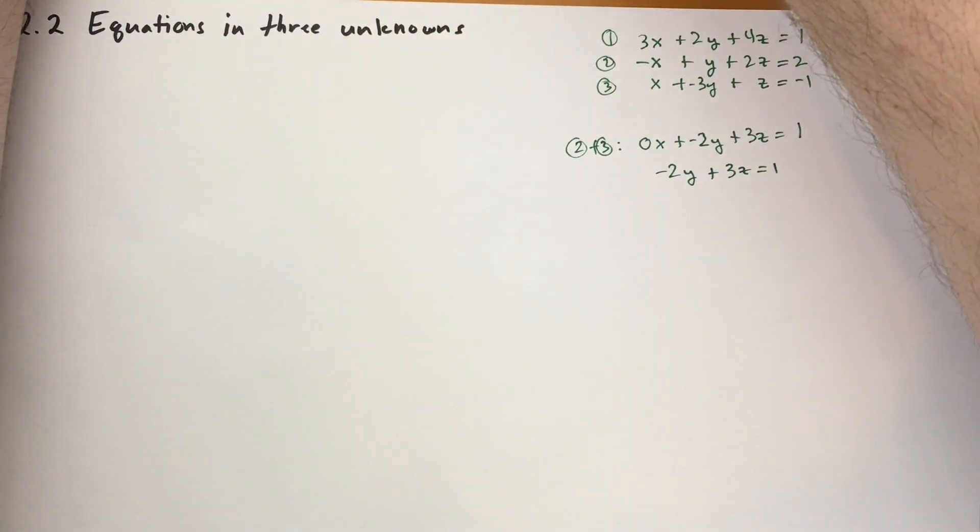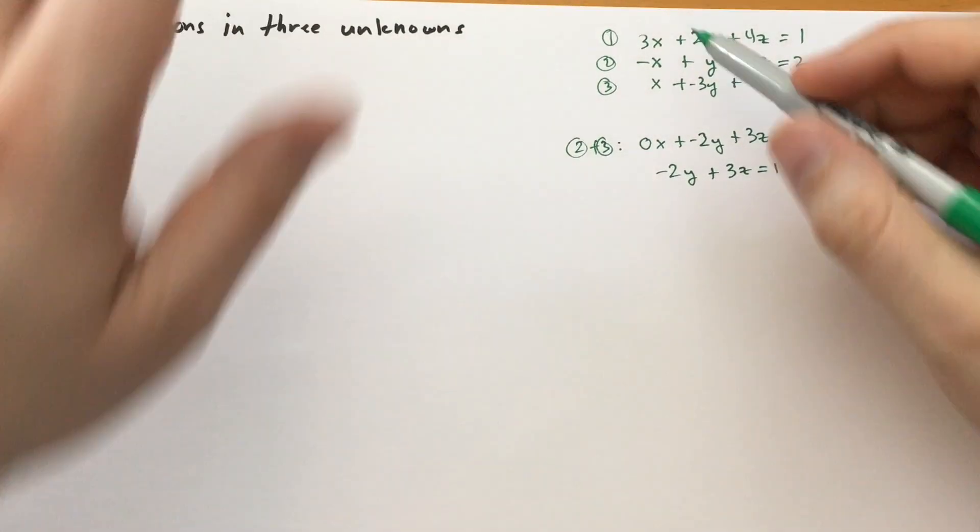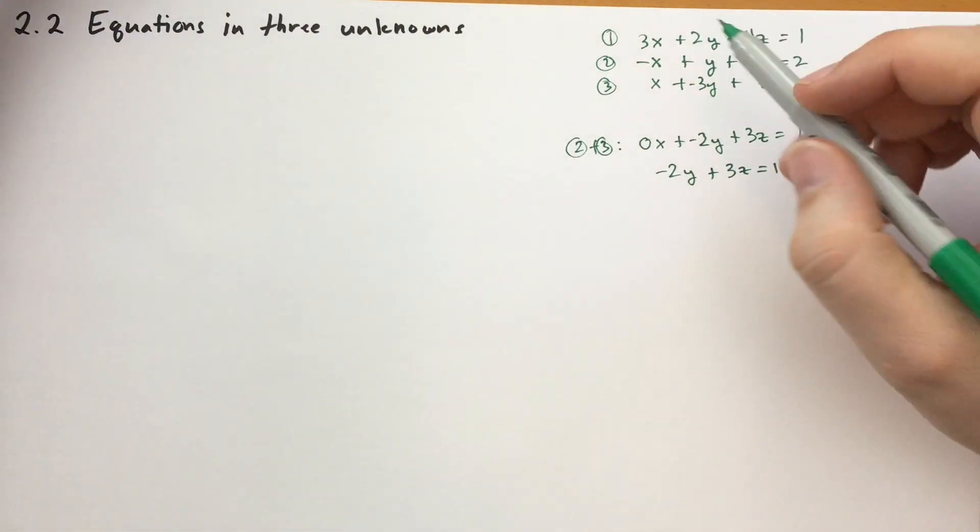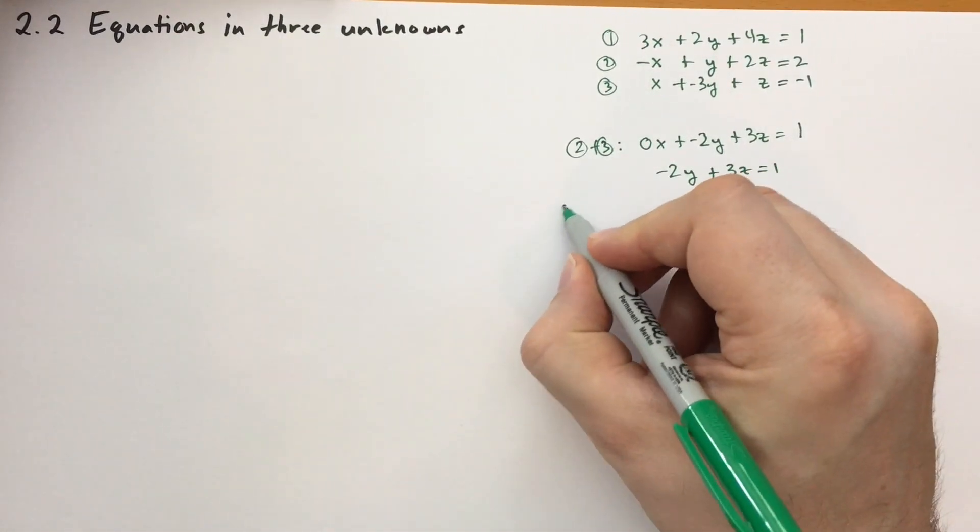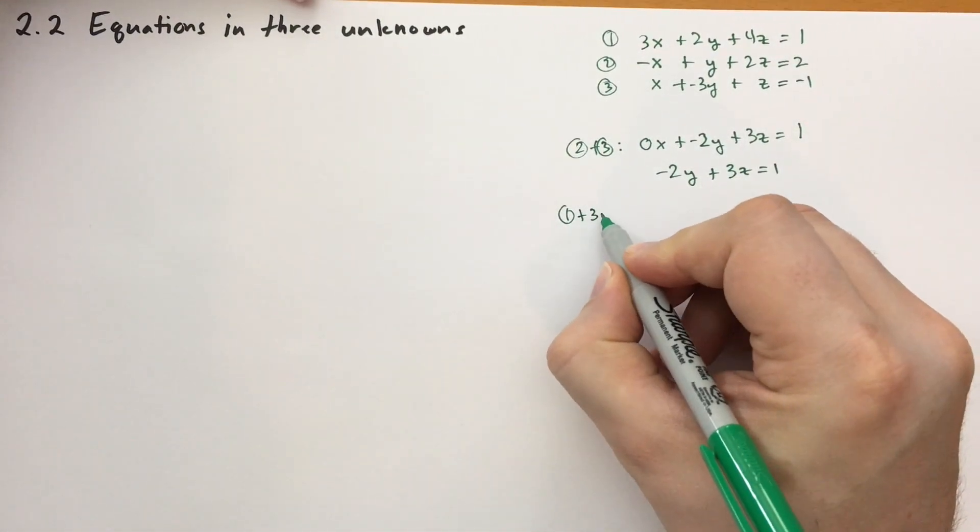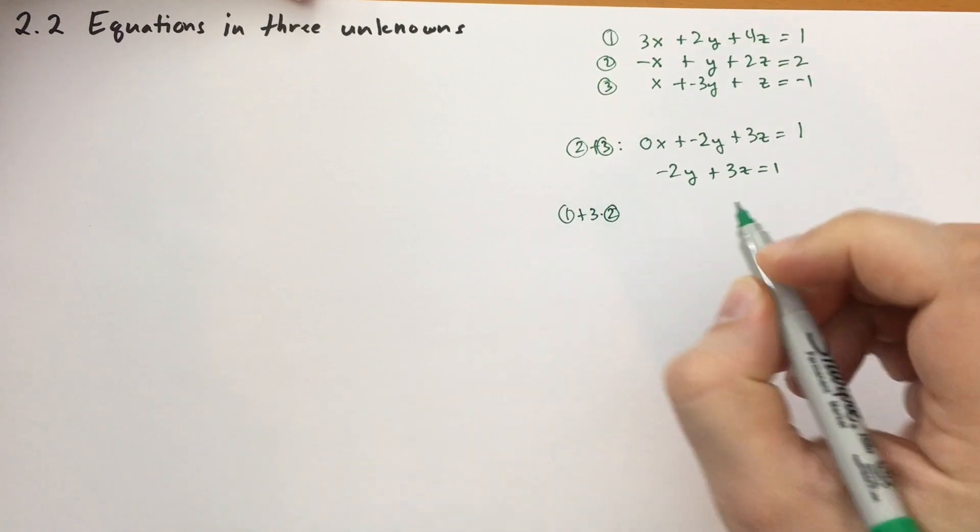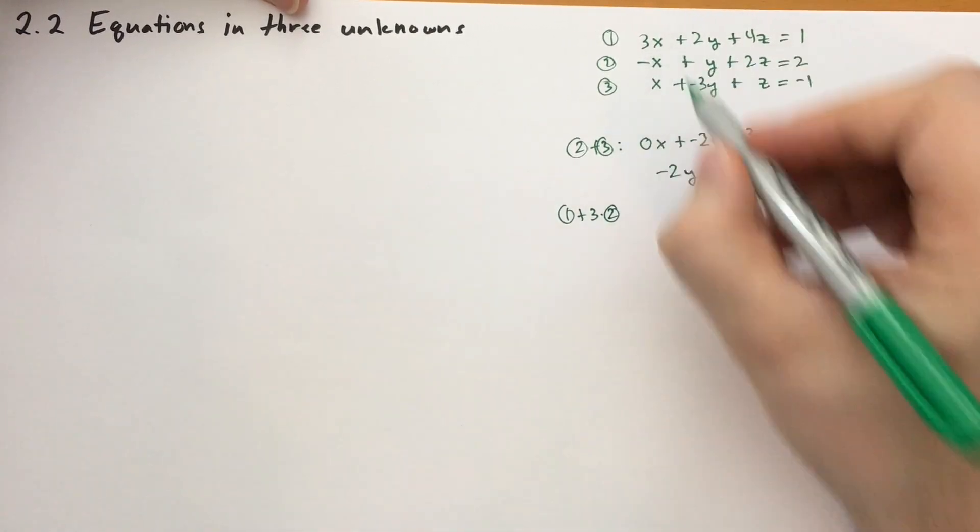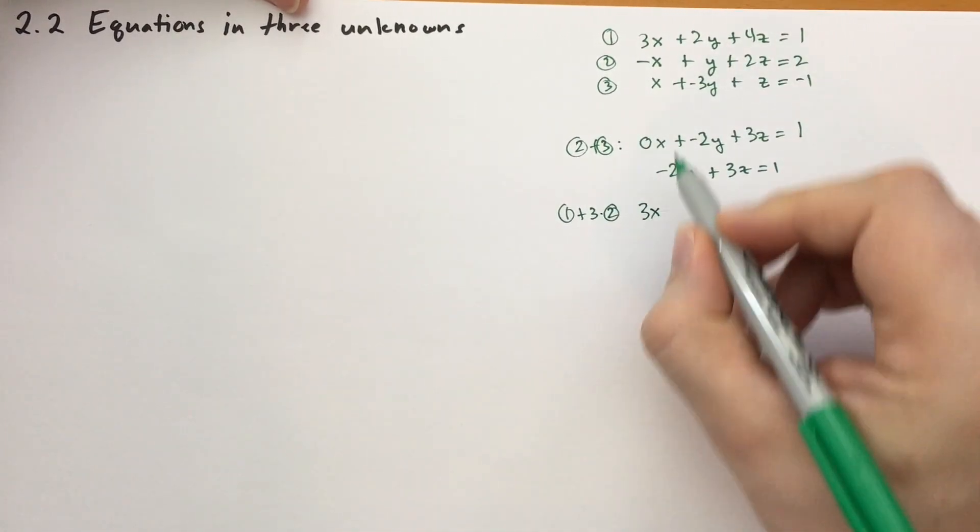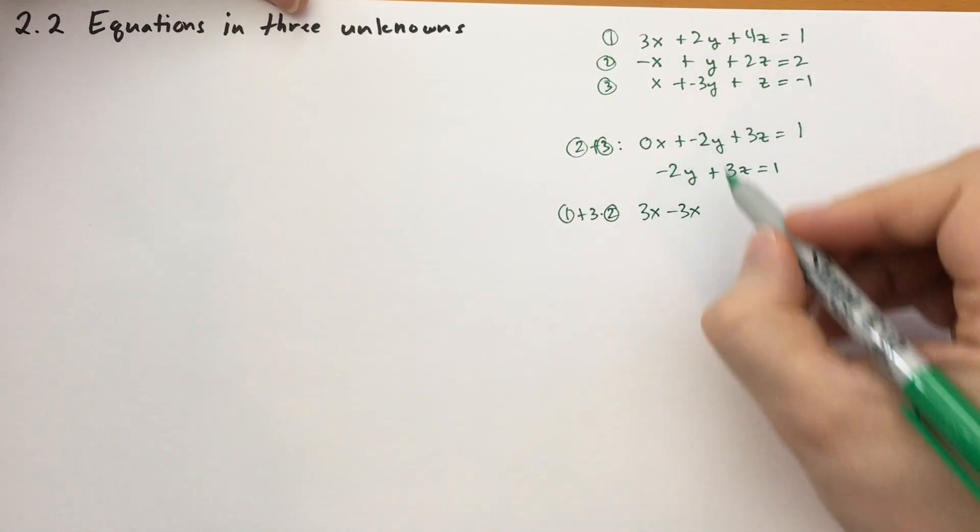We're going to now go back and eliminate x from the first two equations. But we can't just add these together. We have to actually multiply the second equation by 3. So we're going to take equation 1, and we're going to add 3 times the second equation. Okay, so what that's going to look like.